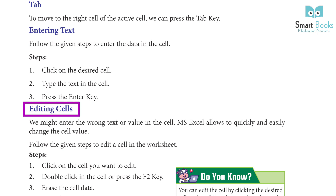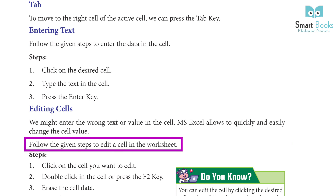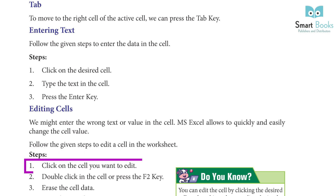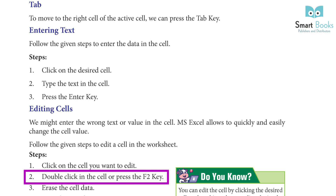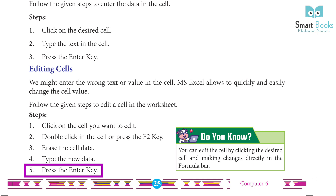Editing Cells: we might enter the wrong text or value in the cell. MS Excel allows us to quickly and easily change the cell value. Follow the given steps to edit a cell in the worksheet. Step 1: click on the cell you want to edit. Step 2: double click in the cell or press the F2 key. Step 3: erase the cell data. Step 4: type the new data. Step 5: press the Enter key.